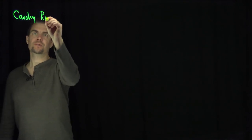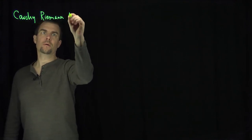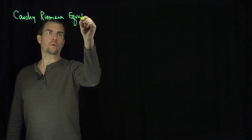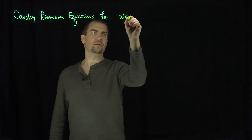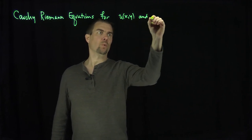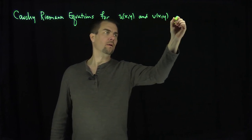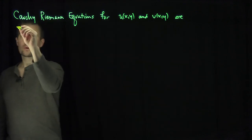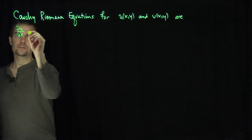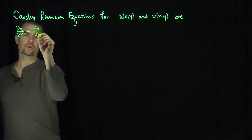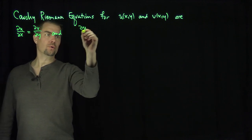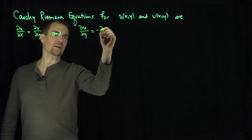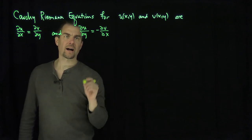Let's recall what the Cauchy-Riemann equations are. The Cauchy-Riemann equations for functions u(x, y) and v(x, y) are: partial u partial x equals partial v partial y, and simultaneously, partial u partial y equals negative partial v partial x.